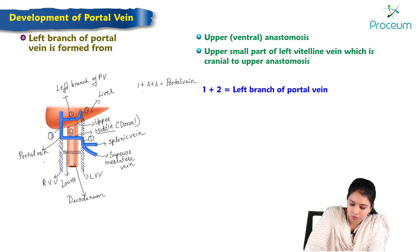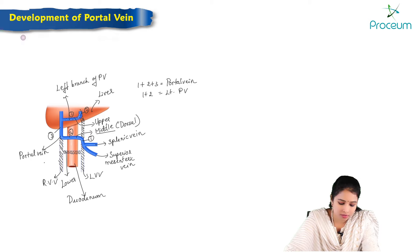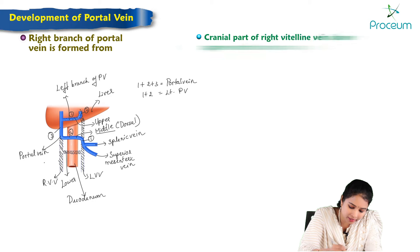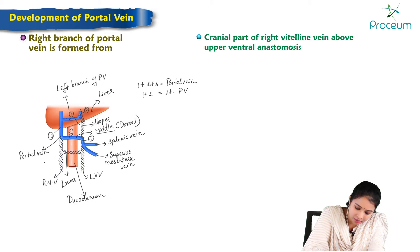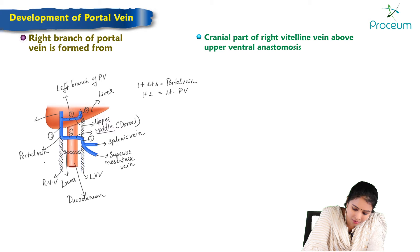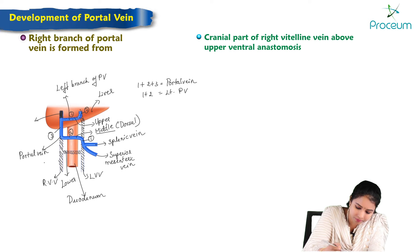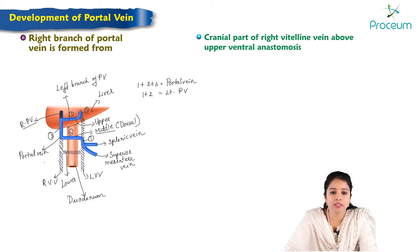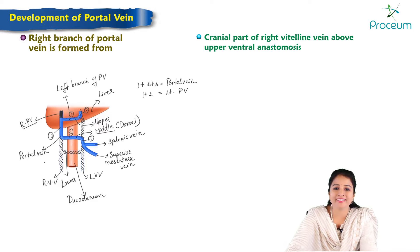The right branch of the portal vein is formed from the cranial part of the right vitelline vein, above the upper ventral anastomosis. This remaining upper segment forms the right branch of the portal vein, completing the development of the portal vein.